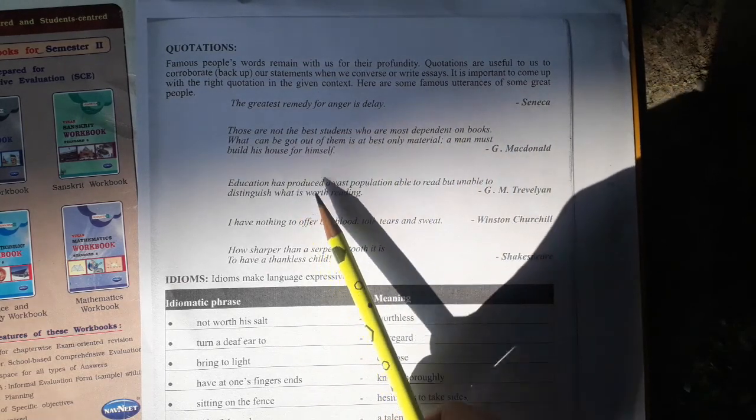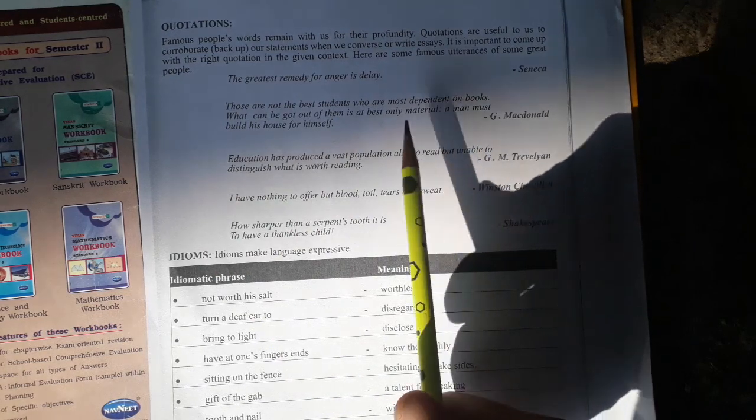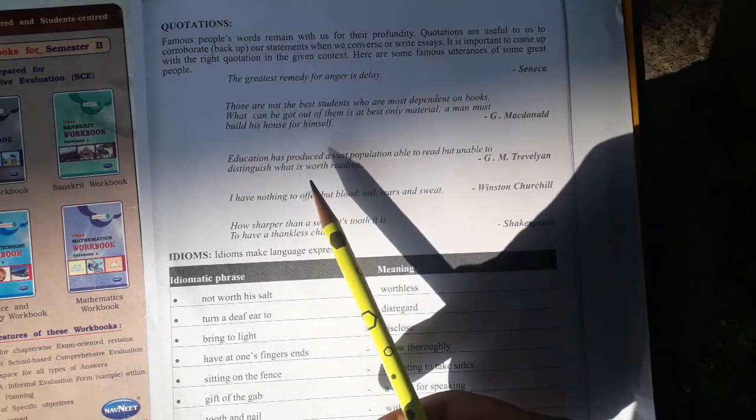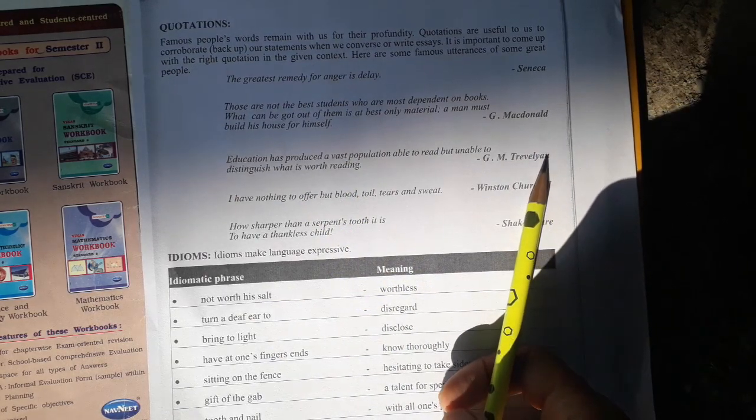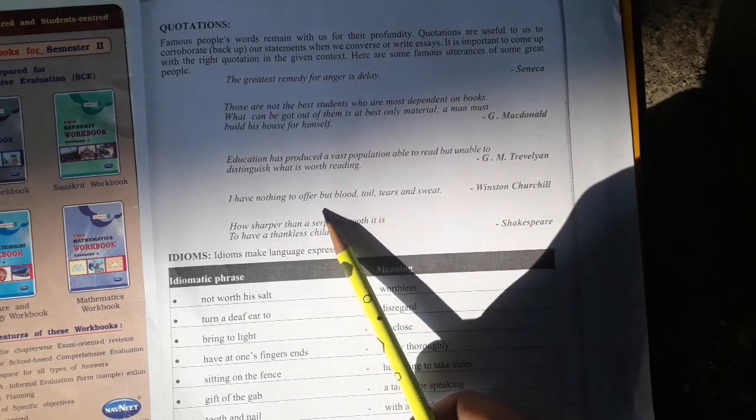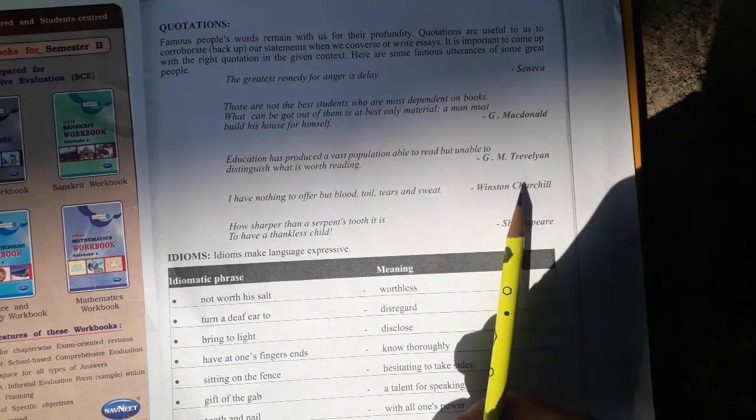Education has produced a vast population able to read but unable to distinguish what is worth reading. G.M. Trevelyan. I have nothing to offer but blood, toil, tears and sweat. Winston Churchill.